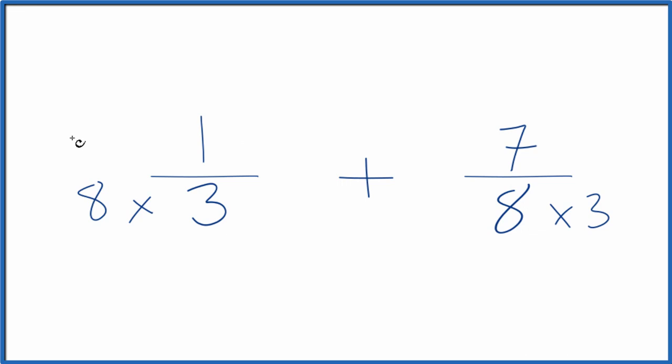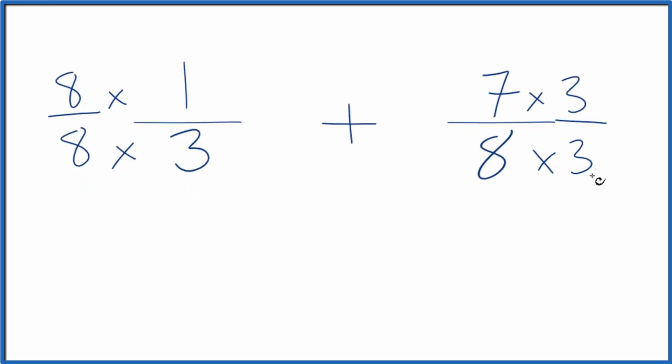So over here for one third, let's multiply it by eight over eight. That's because eight divided by eight is one. So we're multiplying one third by one. It doesn't change anything, just the way it's represented. Over here, since we have three in the denominator, let's multiply that by three as well. Three over three is one.